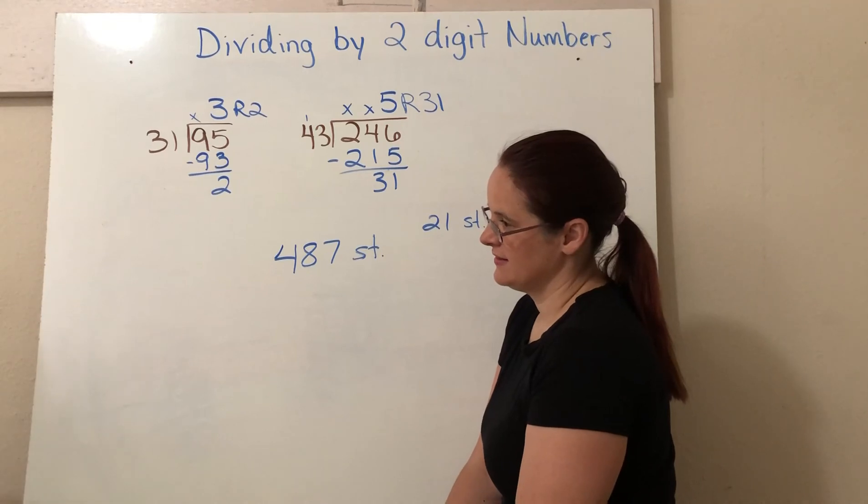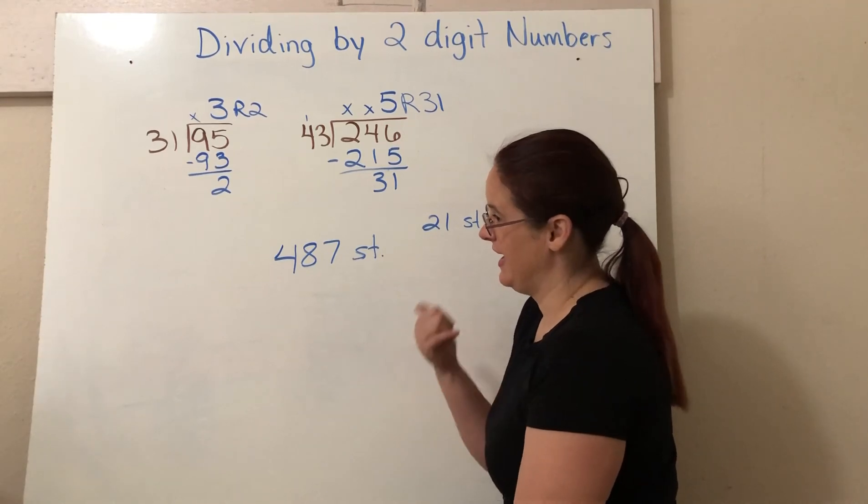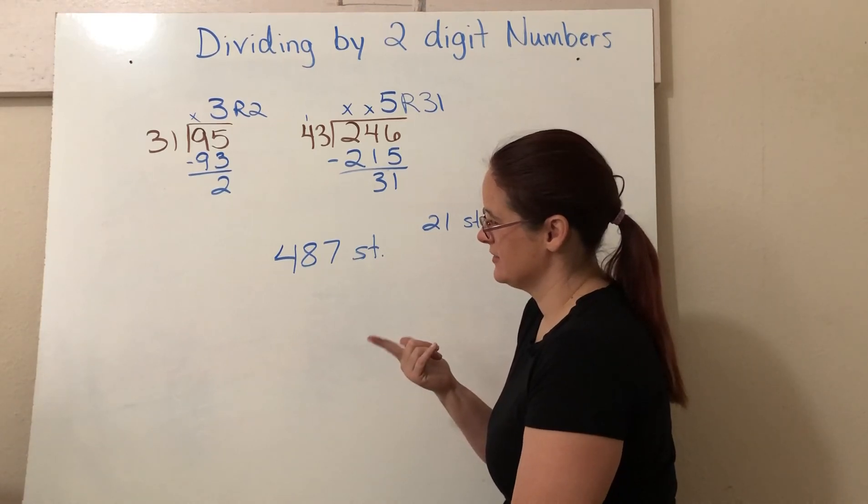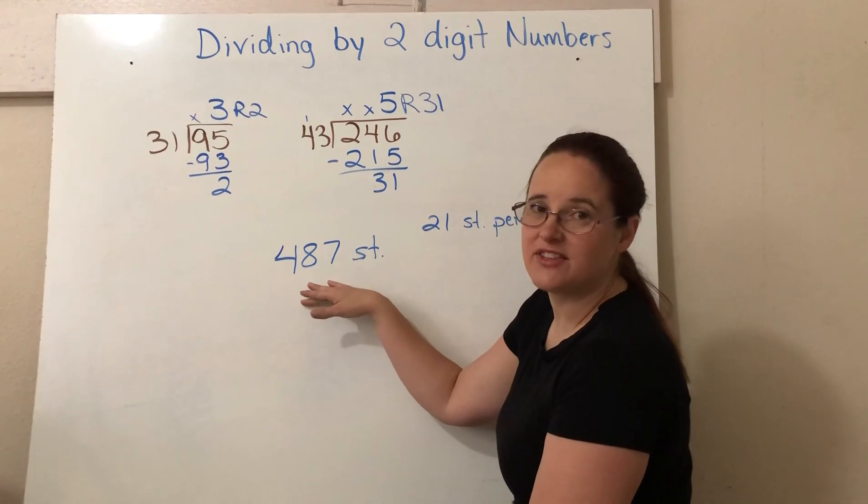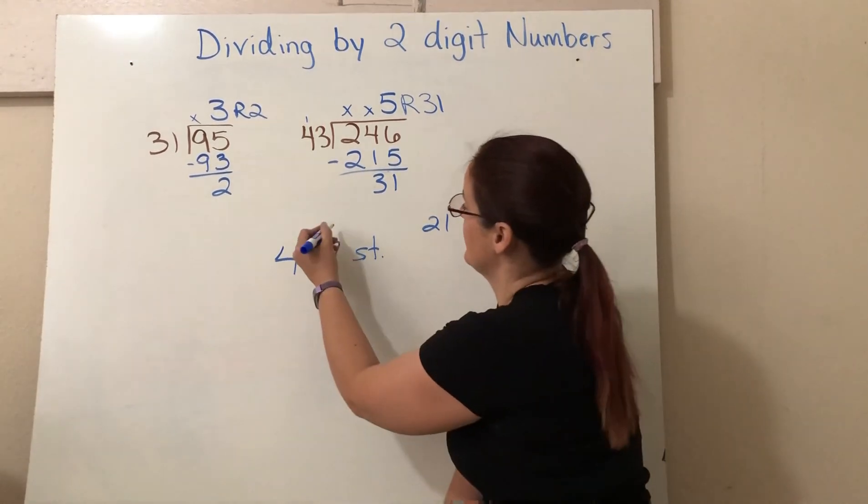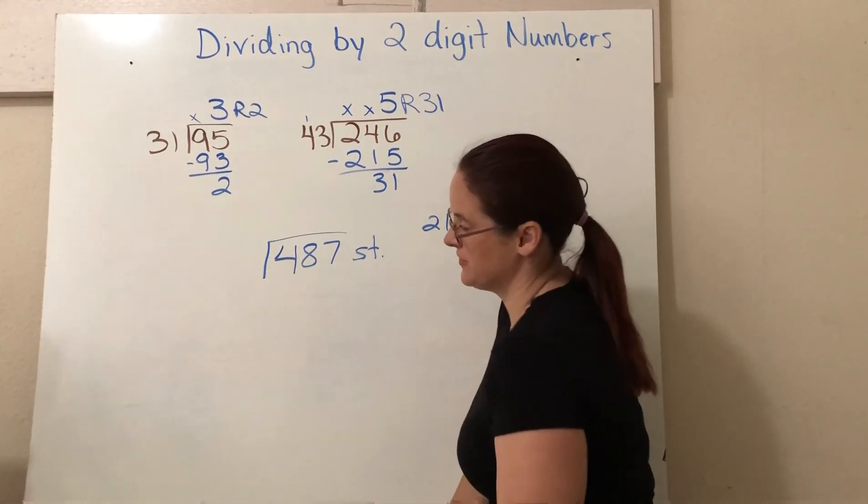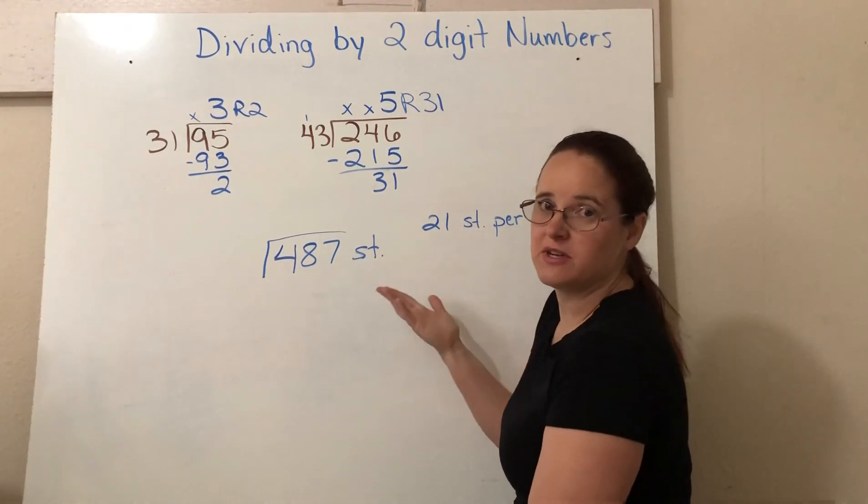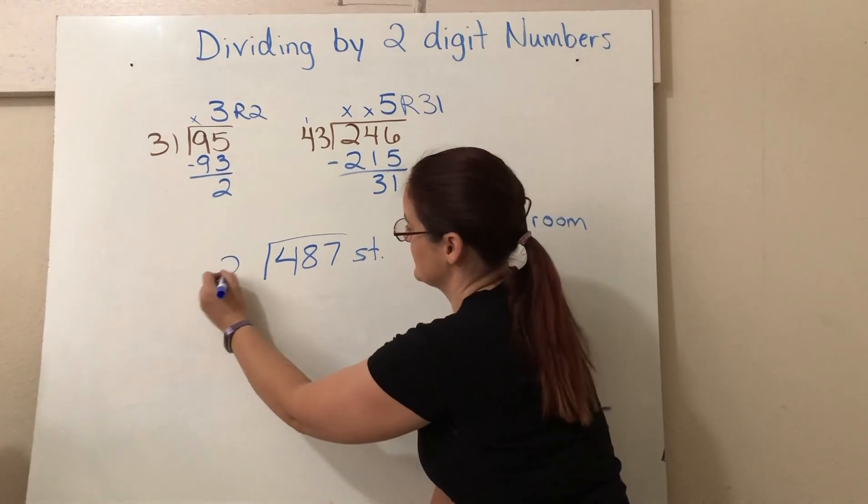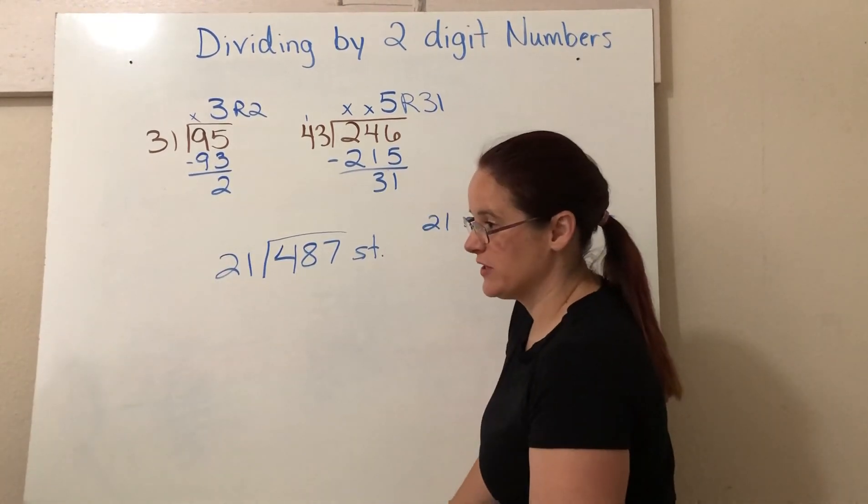Are we going to add? No. Are we going to subtract? Divide. We're going to divide. It's a division problem. We have 487 total students. So that number goes under our house here. And then we want to turn these students into groups of 21 because we want to put 21 kids in a class. So we're dividing by 21.